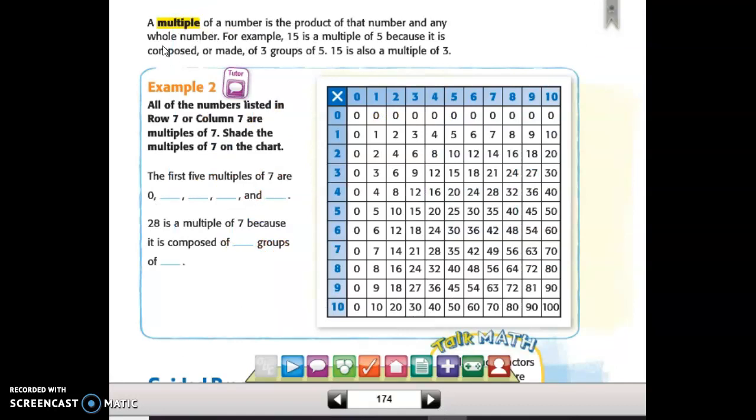So that was factors. In example 2, we're going to talk about multiples, which are sort of the opposite of factors. A multiple is a number that is the product of that number and any whole number. For example, 15 is a multiple of 5 because it is composed or made of three groups of 5. 15 is also a multiple of 3.